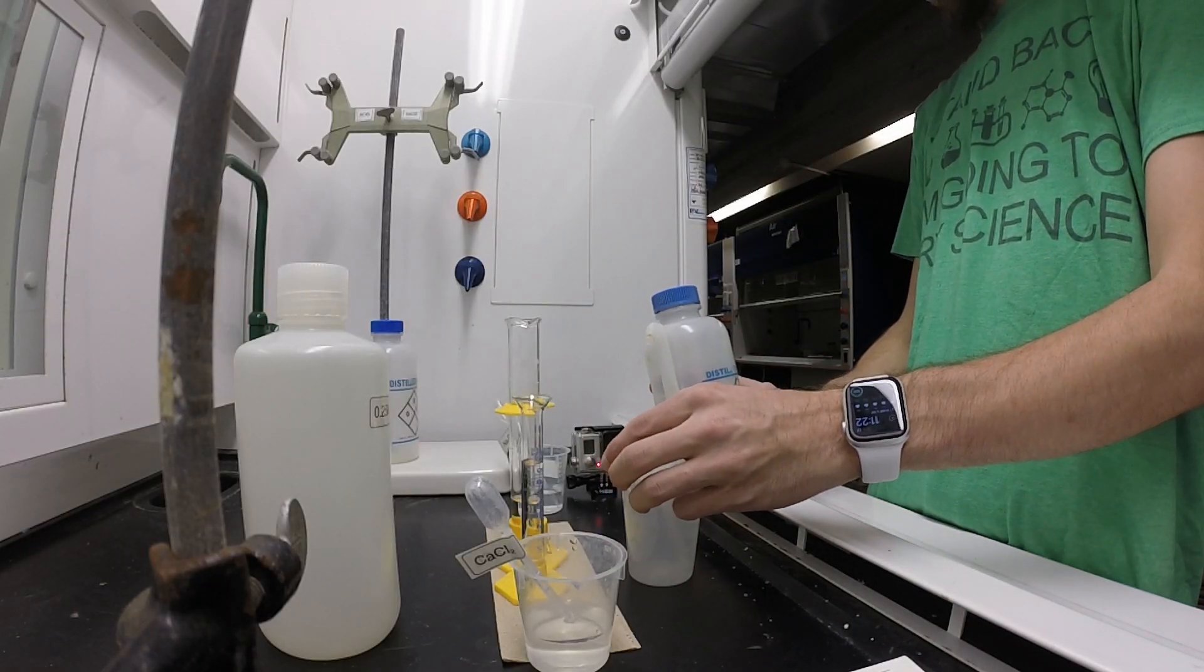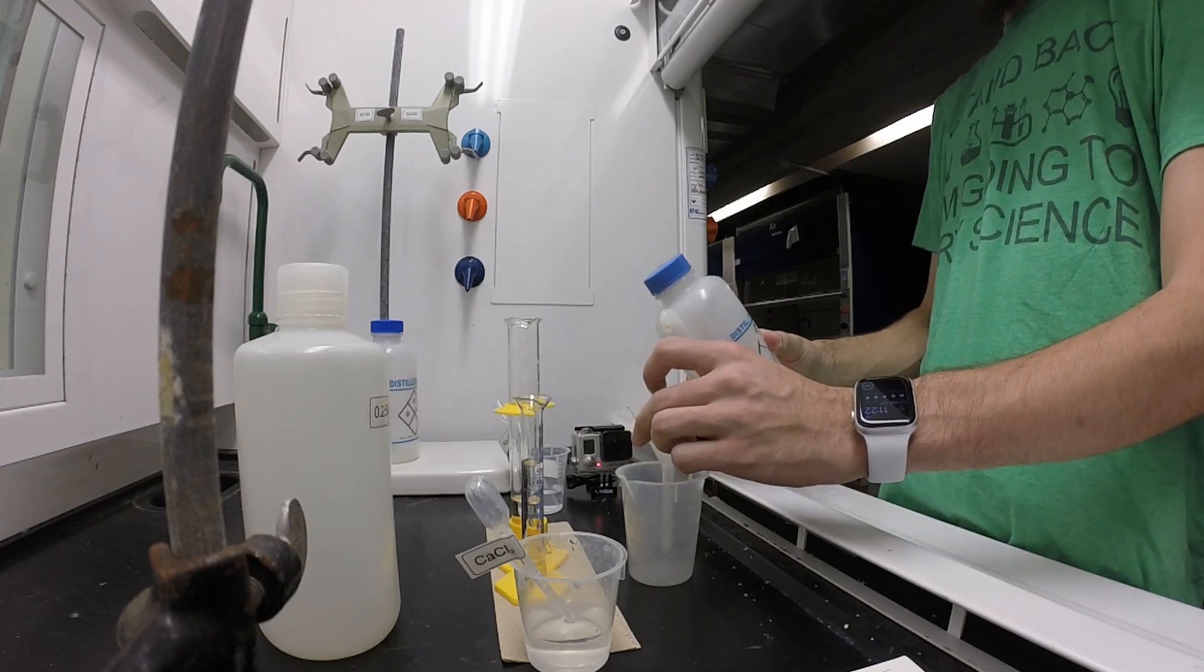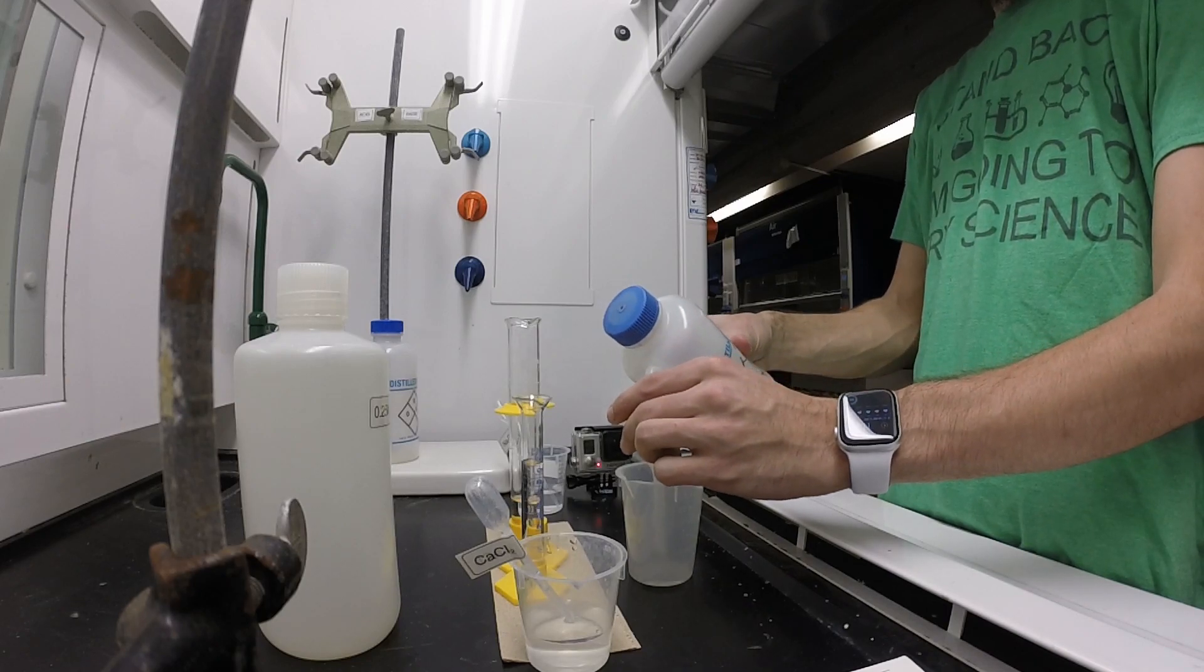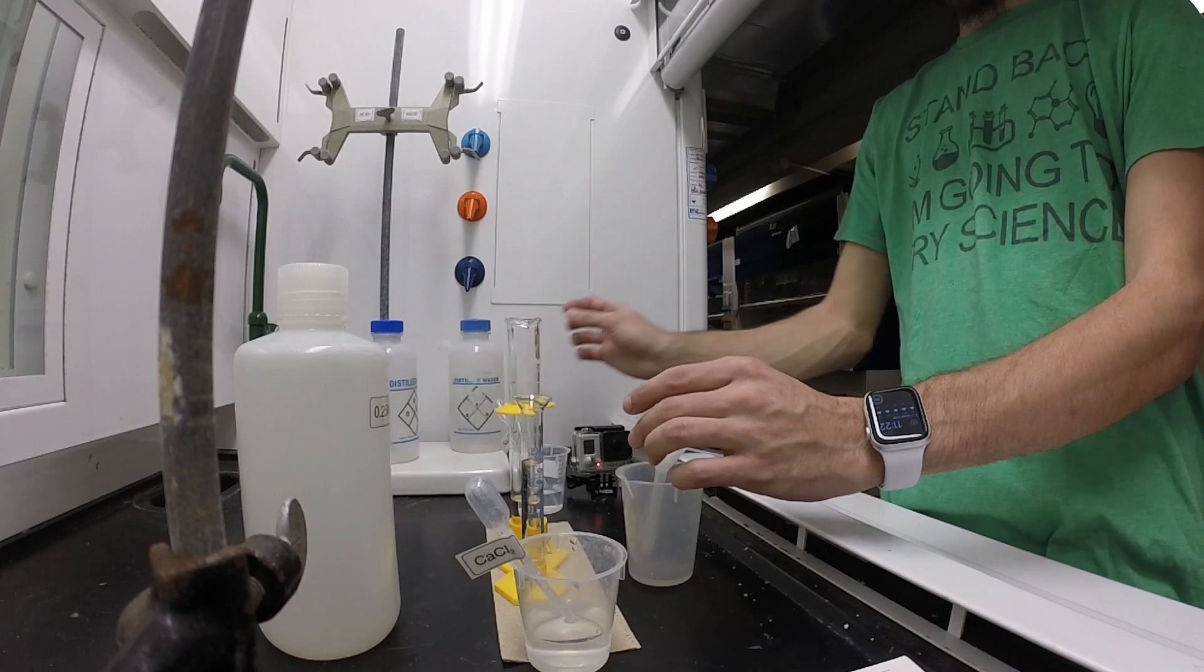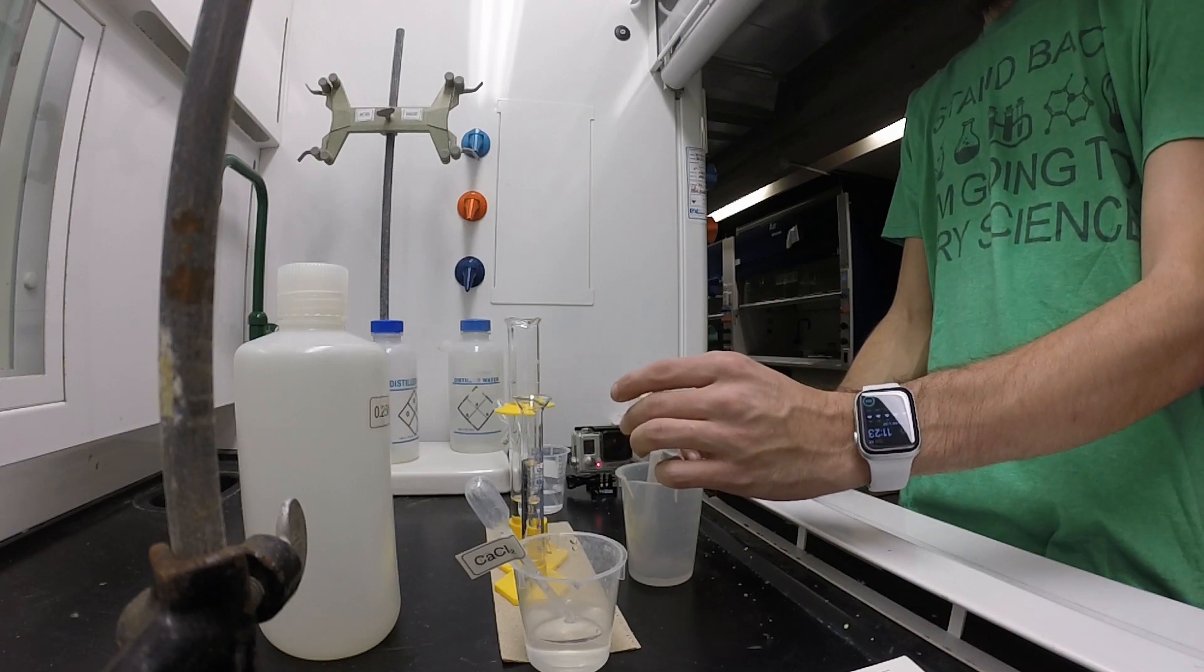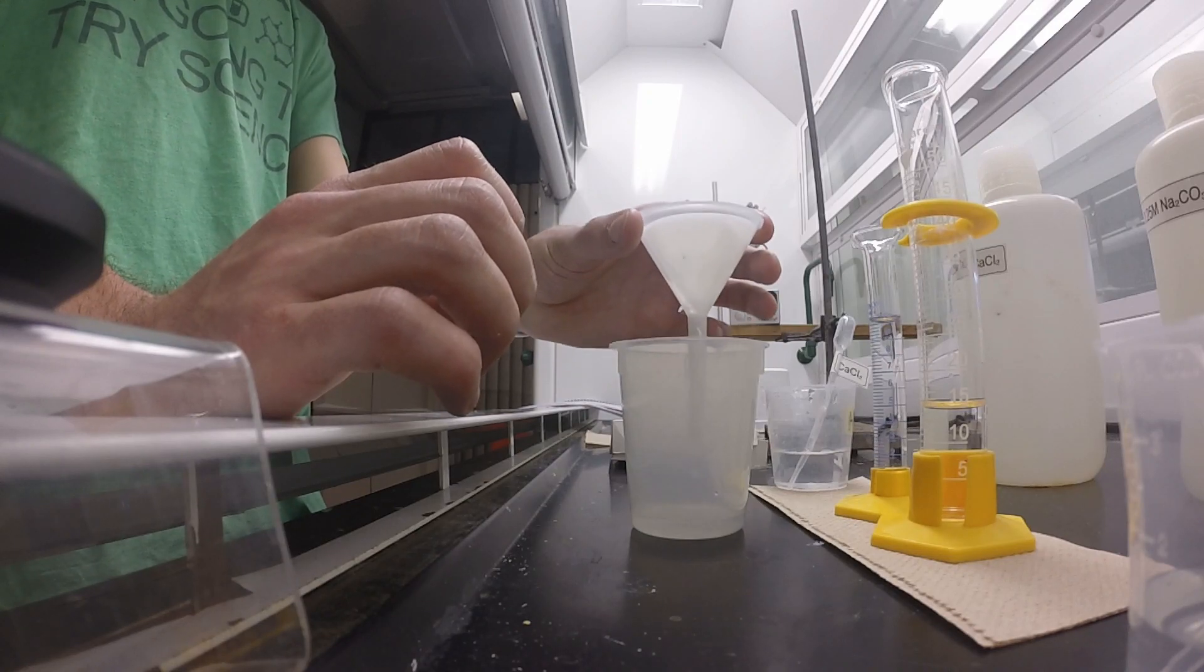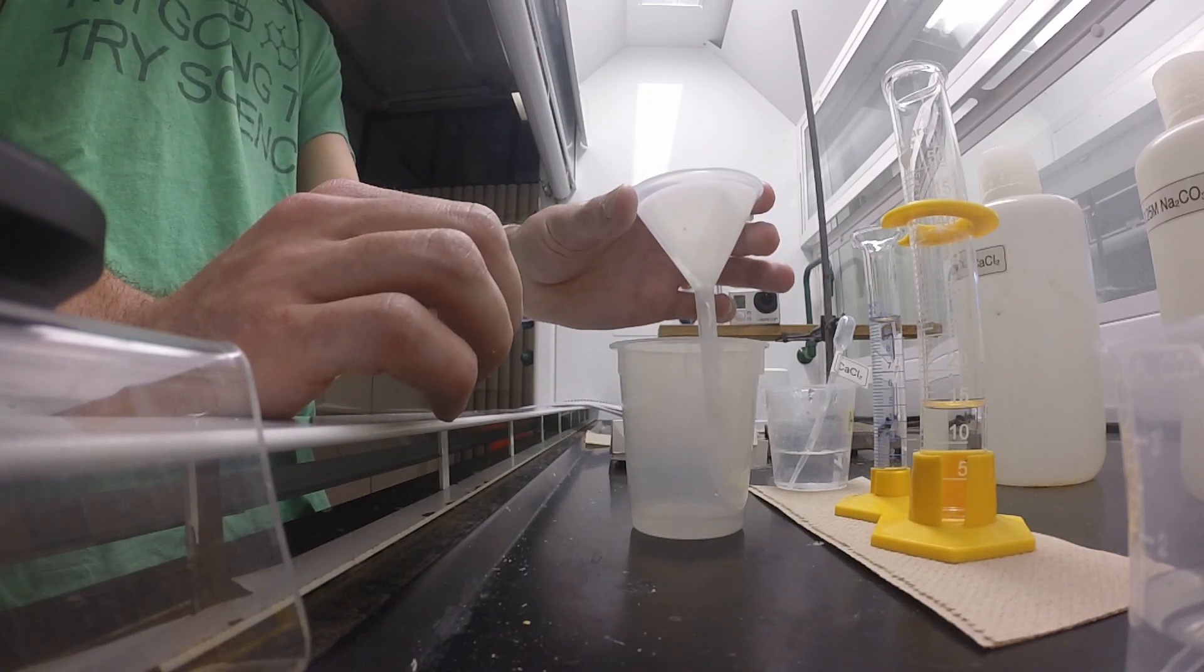Now I'm just going to wet down the filter paper. This is just so it can stick to the funnel - it basically just helps it sit better. This is important too because we don't want there to be much of a gap on the outside of the filter paper, because that would allow our solution to go to the outside and not filter through.